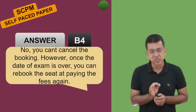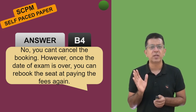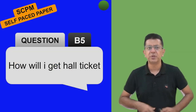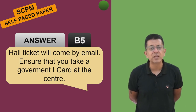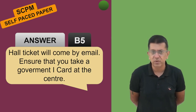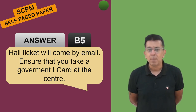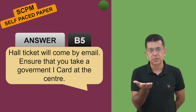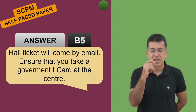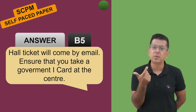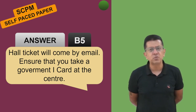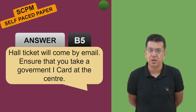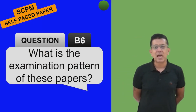Only book the seat once you are fully prepared and sure that you will be going for the exams. How will you get the hall ticket? The hall ticket will come by email. Also take your hall ticket to the examination center along with a government ID like Aadhar card or PAN card for verification. The email usually comes within 24 hours of registering.